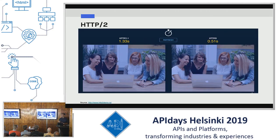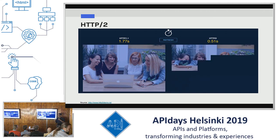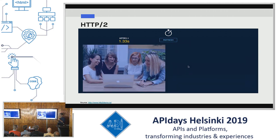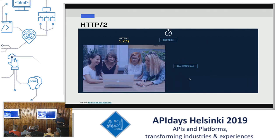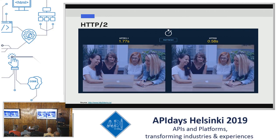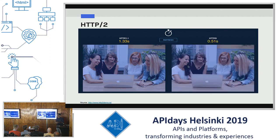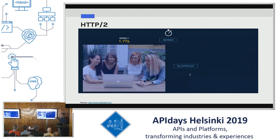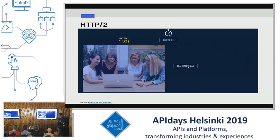Over here we have two images, each consisting of 200 blocks of images put together to clearly show the difference in response times between HTTP1 and HTTP2. The first image uses HTTP1 to request 200 smaller images and the second uses HTTP2. As is evident, HTTP2 response time is less than 50% of what HTTP1 gives us.